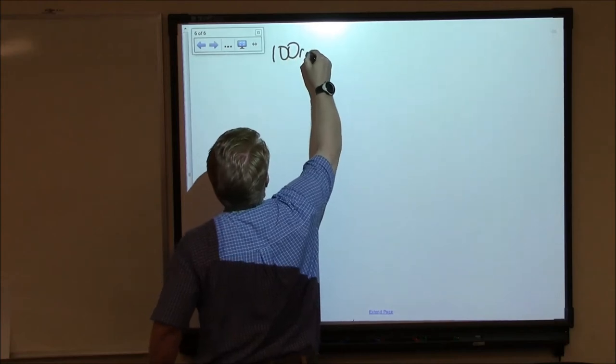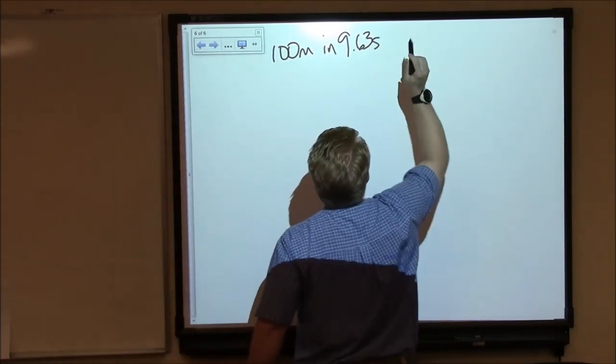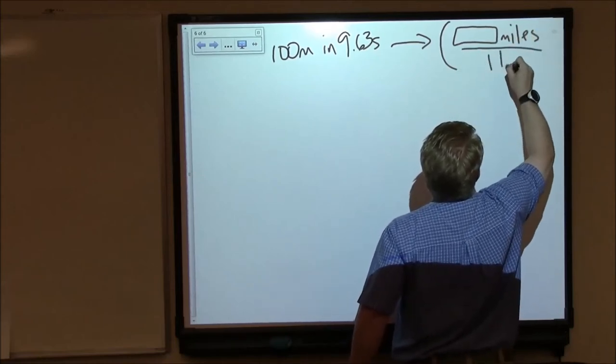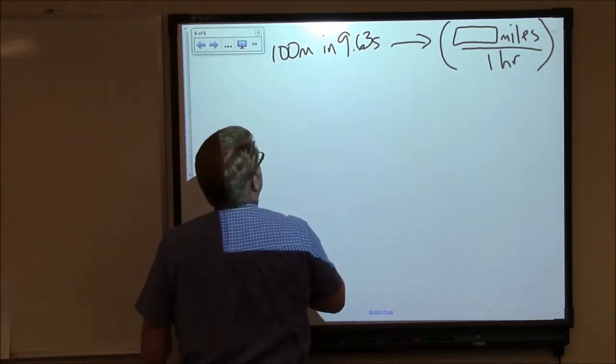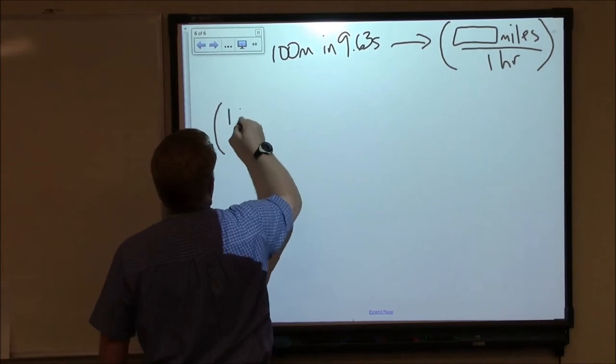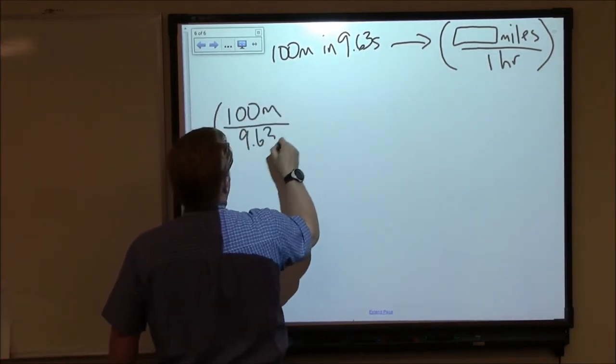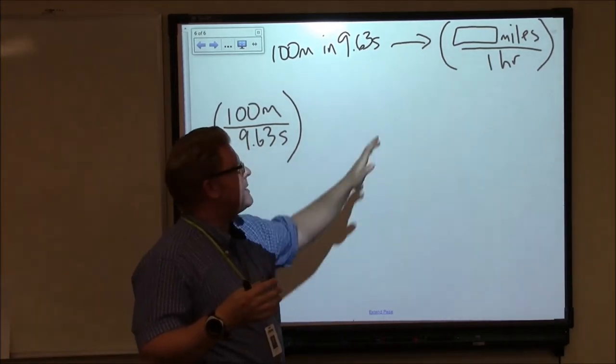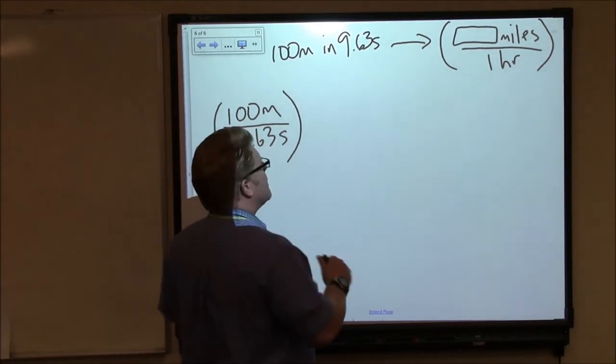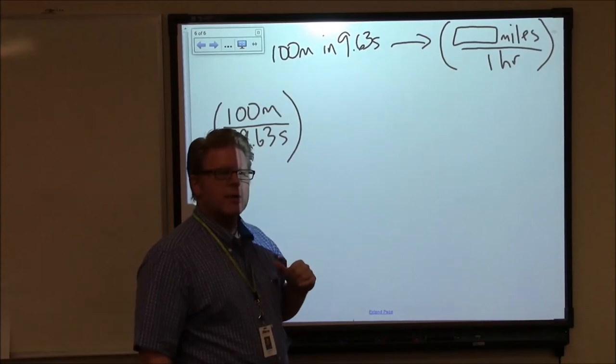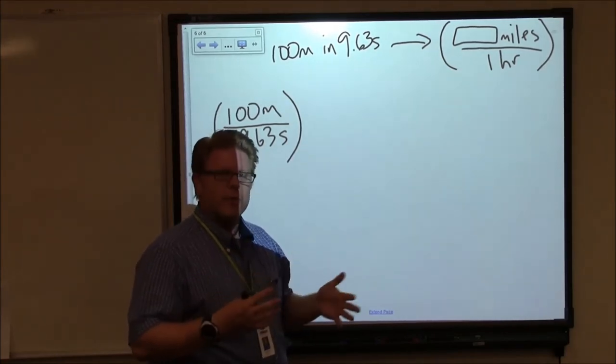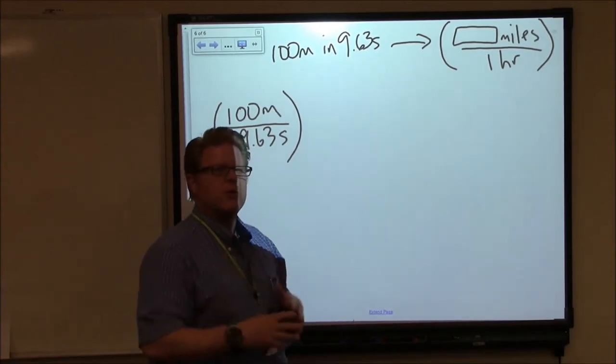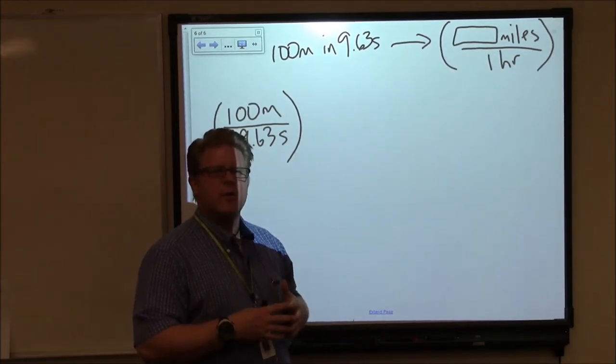So Usain Bolt ran 100 meters in 9.63 seconds. We want to know how many miles in one hour that works out to. So let's start with our statement and turn it into a ratio. 100 meters, 9.63 seconds. That seems like a good order because then we can talk about some meters per second speed. Meters per second, the distance per time, it sounds like miles per hour, so we've got the right order that way. How are we going to go from meters to miles? I remember we talked about this relationship between kilometers and miles, and I know there's a relationship between meters and kilometers. So let's start there.